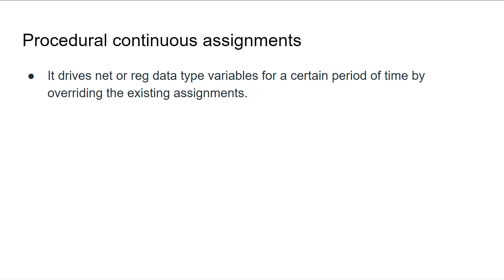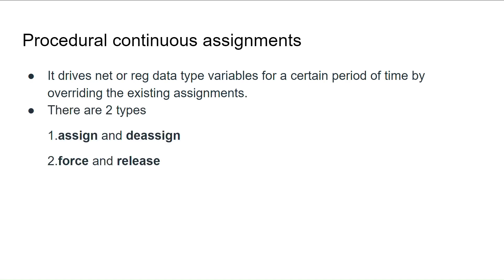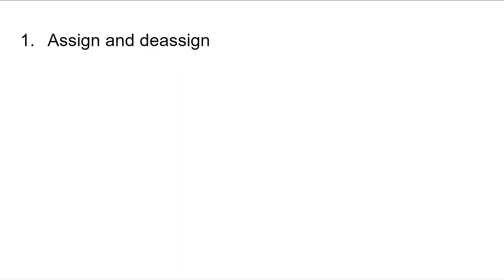Procedural continuous assignments are used to drive both net and reg data types for a certain period of time by overriding the existing assignments. We have two types: one is assign and deassign, and another one is force and release. These are keywords used to assign values. The assign and deassign keywords are used for reg data type only, not for net type. Force and release can be used for both types.